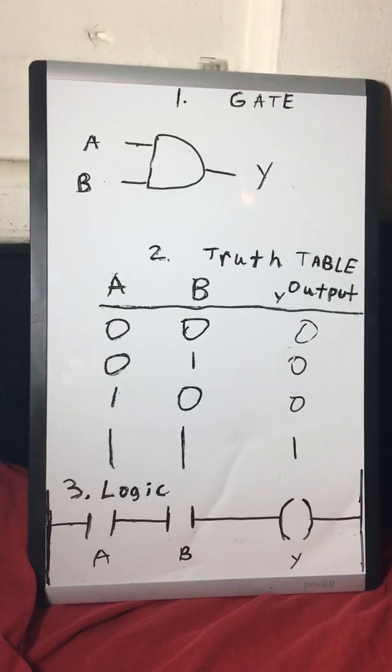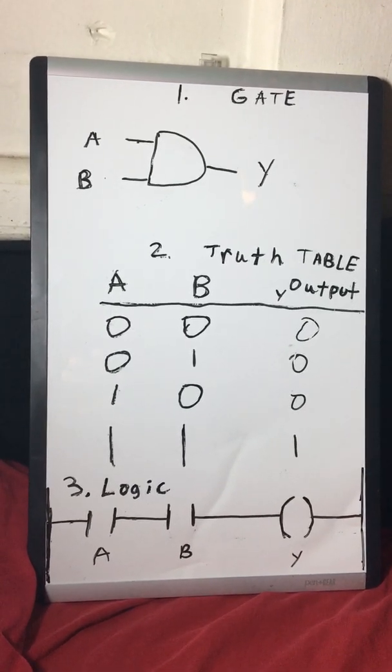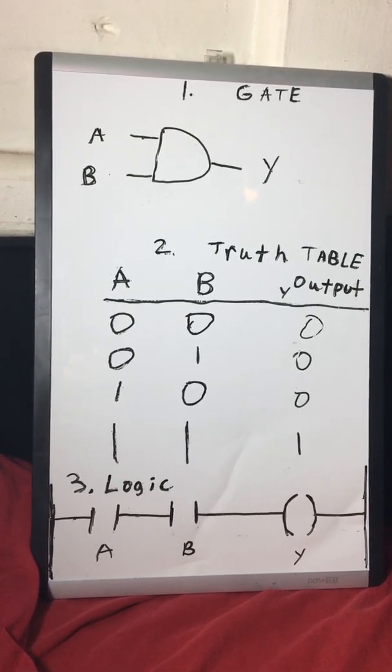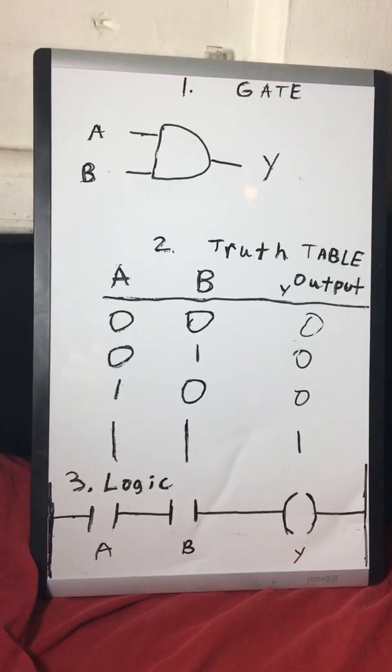If you have input A zero and input B one (or input B high), you will not activate the output.